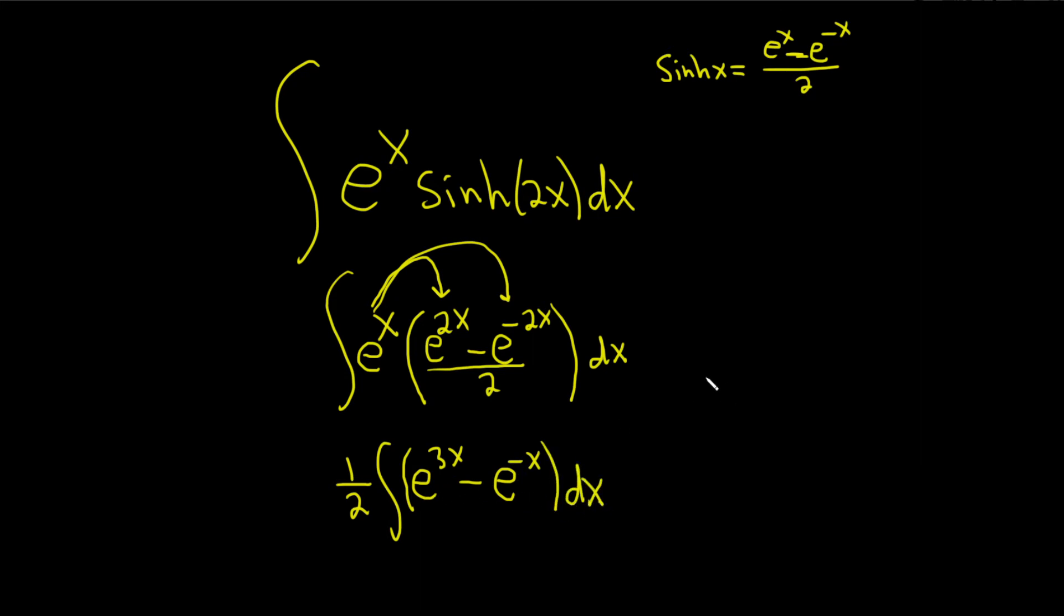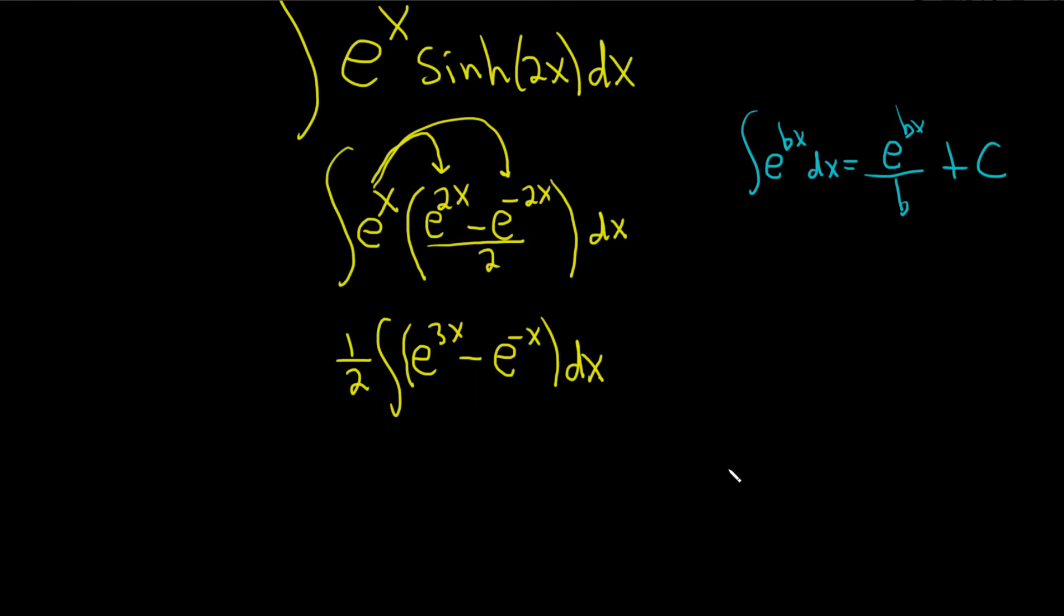To integrate these, we're going to use a very powerful formula. So if you have e to the b times x, where b is a non-zero number, this is equal to e to the bx over b plus c. This always works as long as the number times x, and that number is obviously not equal to 0.